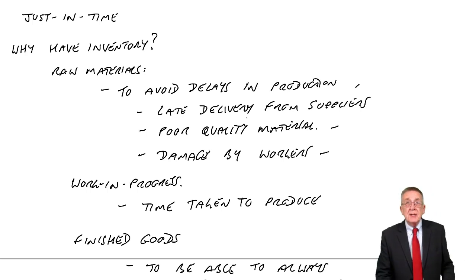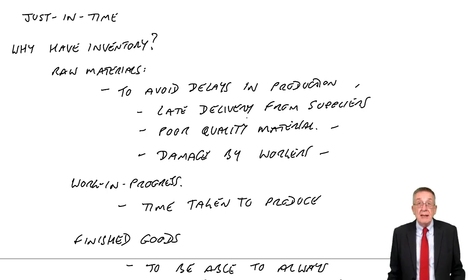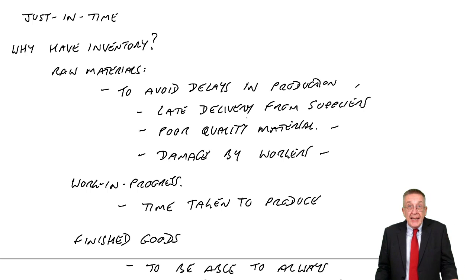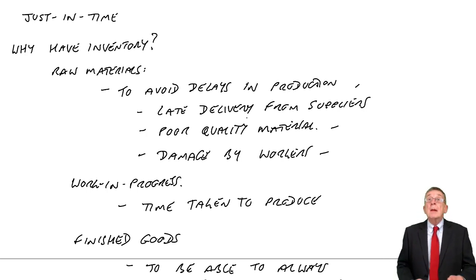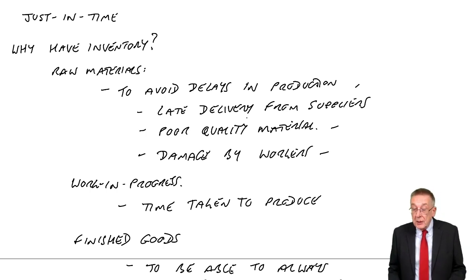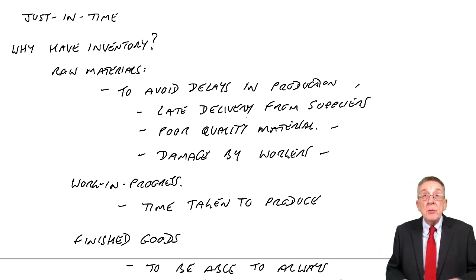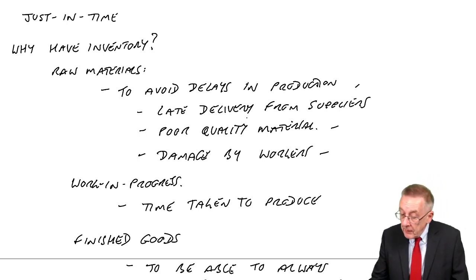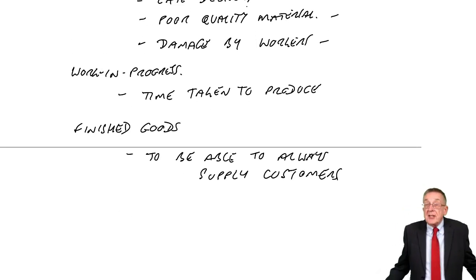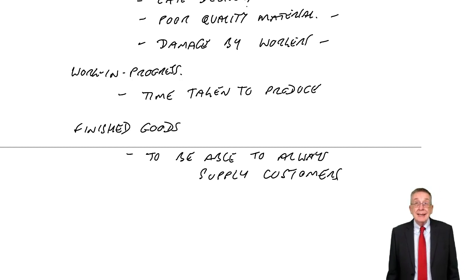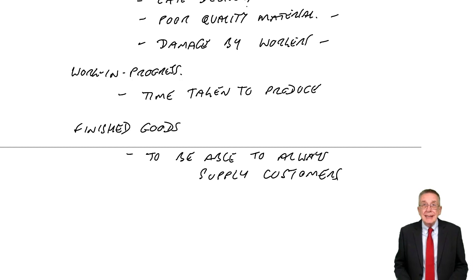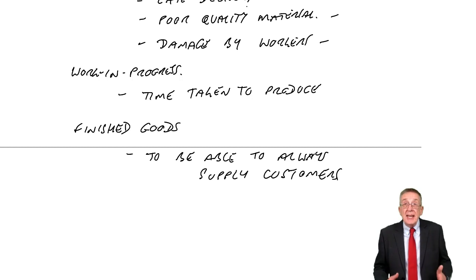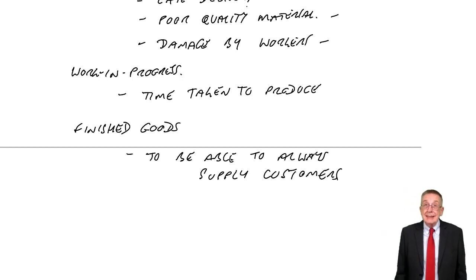Now, damaged by workers — well, that's ridiculous. If our workers are damaging material, we need to train them better or employ better workers. The workers shouldn't be damaging inventory; it's costing us money anyway. If we can make sure our workers do a good job and don't damage inventory, we're saving money because there's no damage — and that's one more reason for holding inventory that we no longer need. What about work in progress? The faster we produce, the less work in progress there will automatically be, and it's saving us money as well.